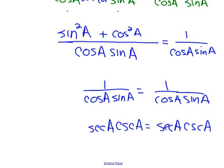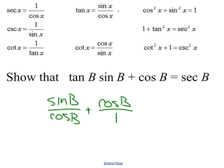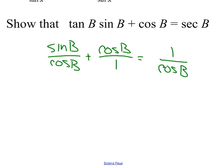It's important to know where you want to end up. If you're getting lost, think: what do I need this to look like, what do I have, what do I need, what can I do? Let's try one more, a little more complicated. My first strategy is almost always the same: turn everything into sine and cosine. So tangent of b is sine of b over cosine of b, and since I have a fraction, I'll make cosine of b a fraction too. Secant of b is 1 over cosine of b.